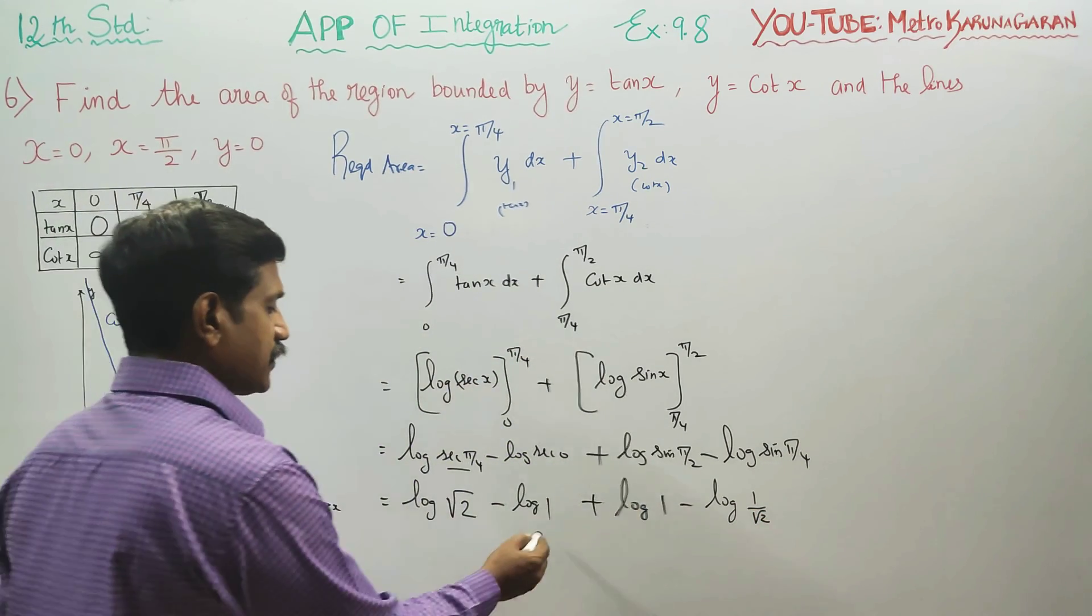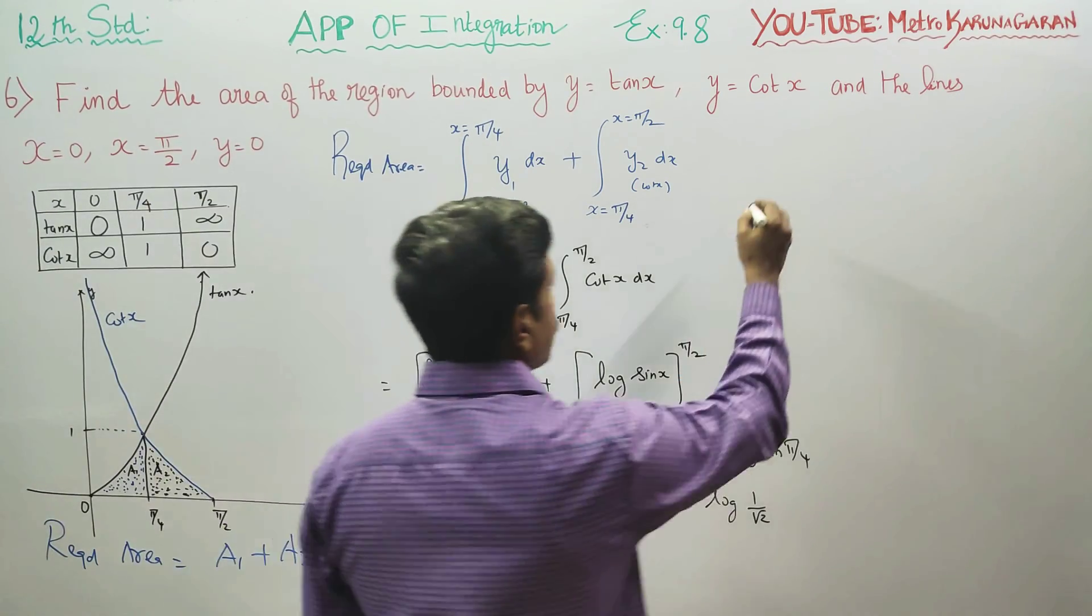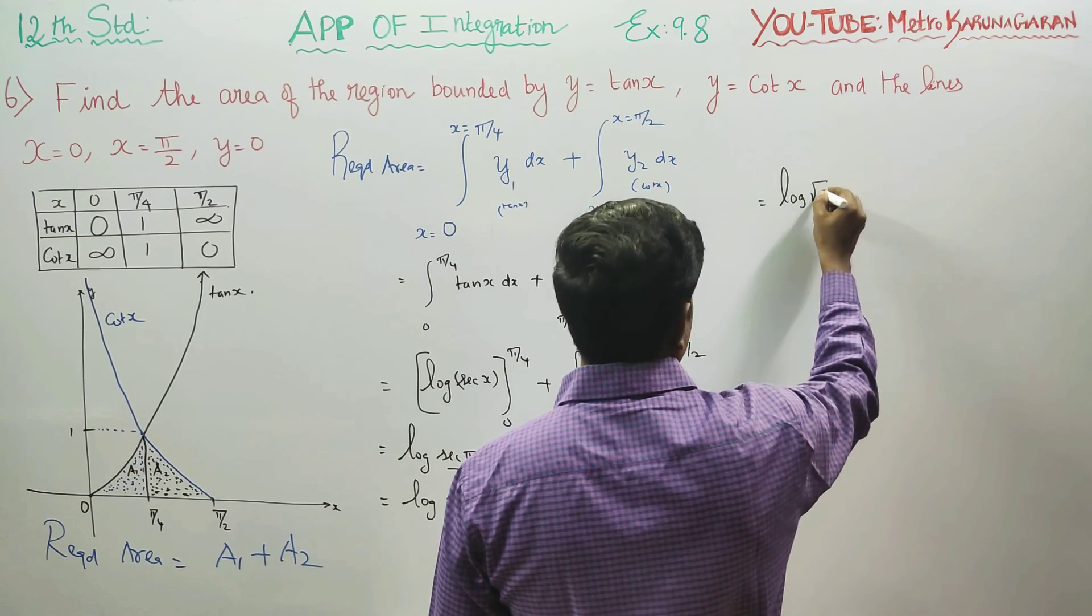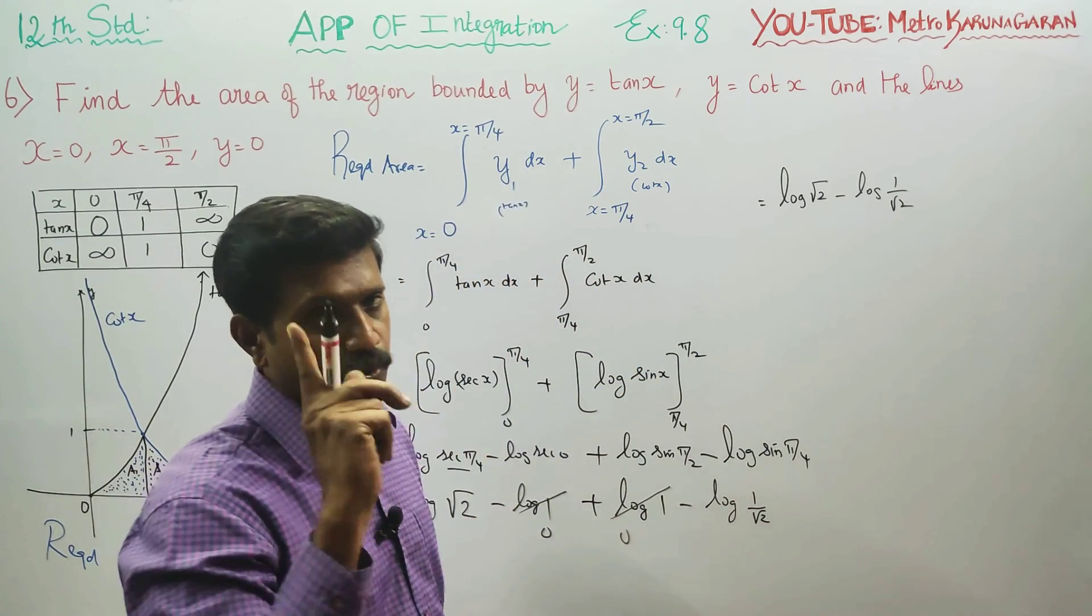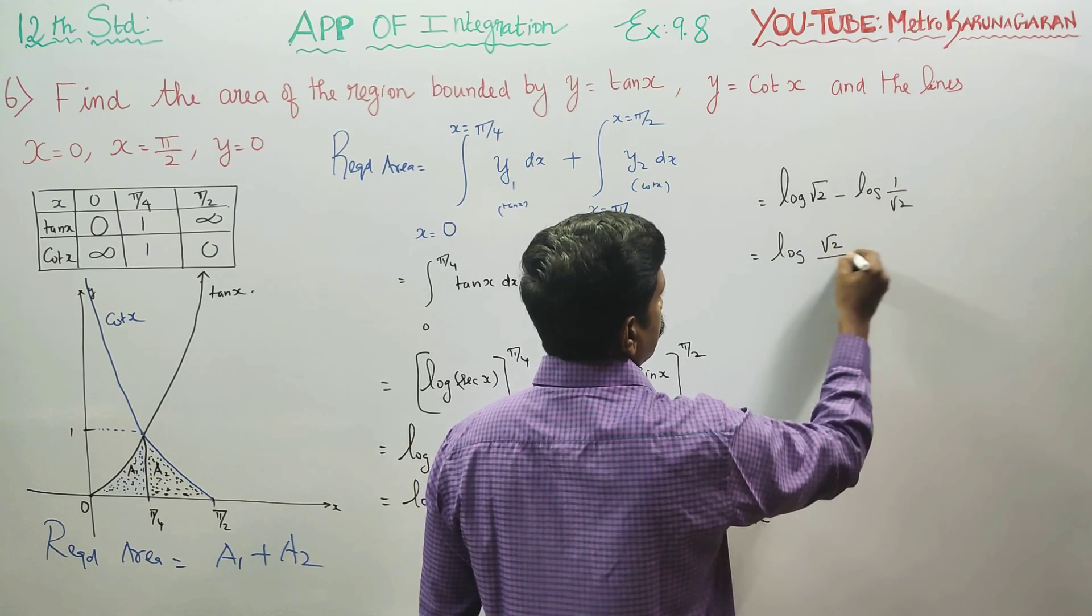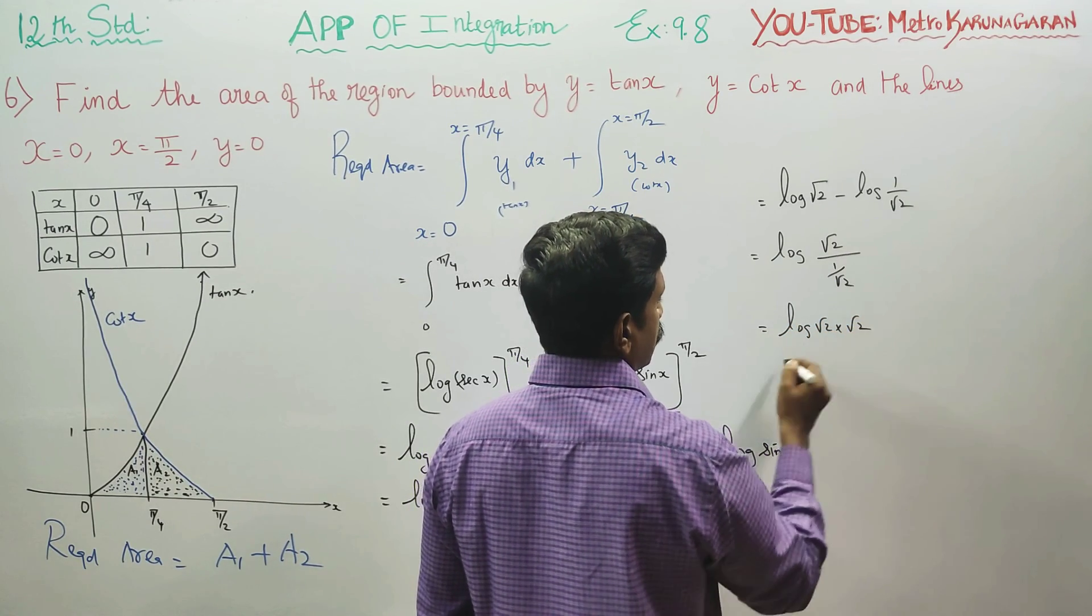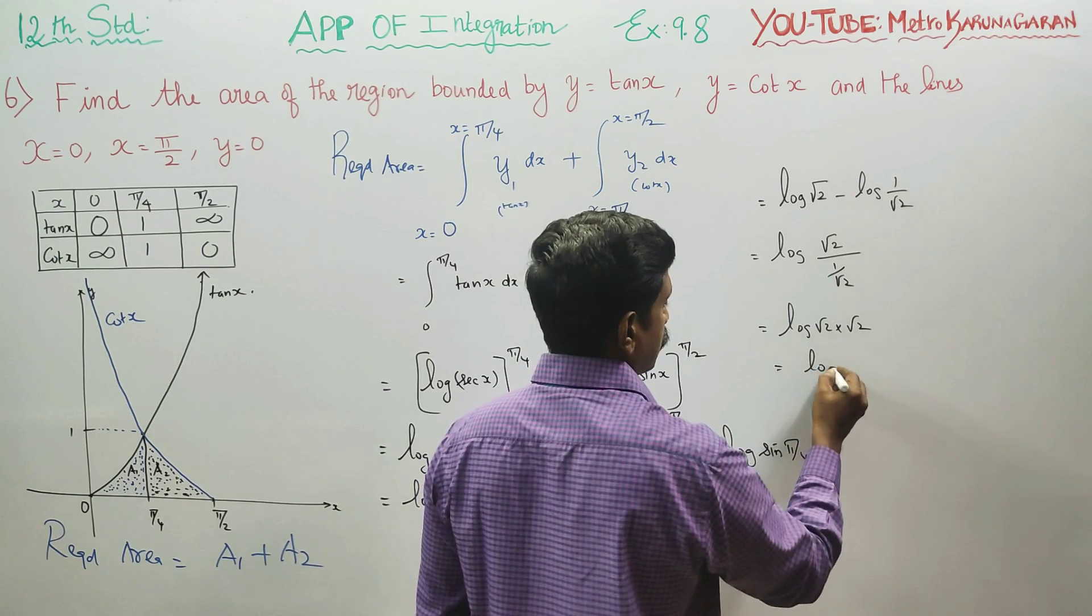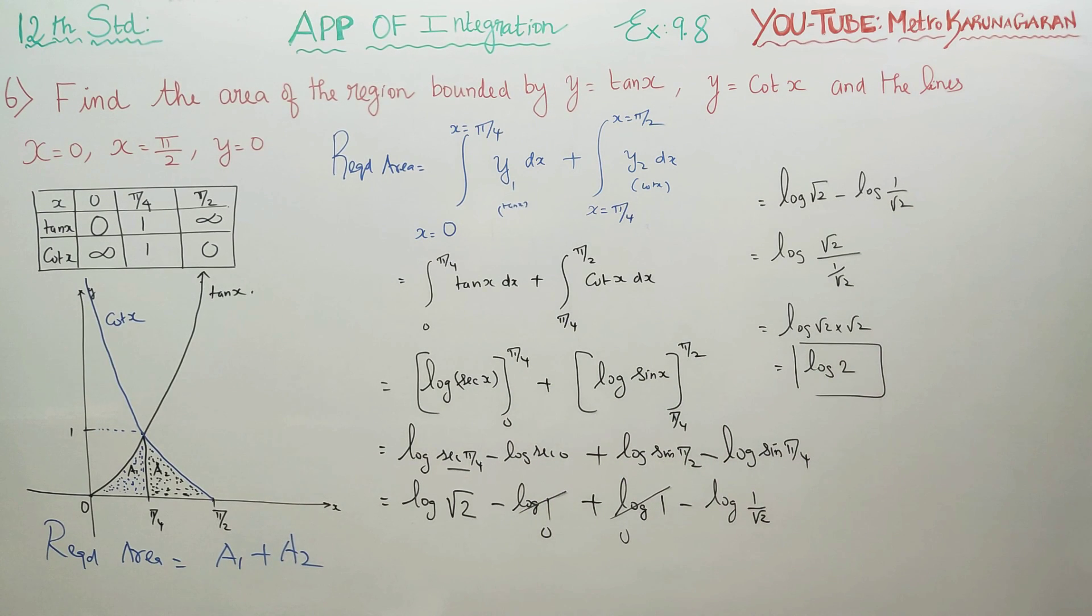Logarithm of 1 terms cancel out. Balancing, you will be getting logarithm of root 2 minus logarithm of 1 by root 2. This becomes logarithm of root 2 divided by 1 by root 2, which equals root 2 times root 2 equals 2. Therefore logarithm of 2. This is your final answer. Log a minus log b is log a by b.